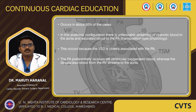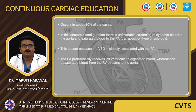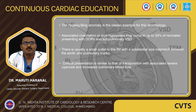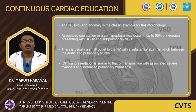Subpulmonary VSD occurs in 30% of cases. In this anatomical configuration there is unfavorable streaming of deoxygenated blood to the aorta and oxygenated blood to the pulmonary artery — it behaves more like transposition physiology. This occurs because the VSD is closely associated with the pulmonary artery; the pulmonary artery preferentially receives left ventricular oxygenated blood whereas desaturated blood from the right ventricle streams to the aorta. The Taussig-Bing anomaly is the classical example of this morphology. Associated coarctation or arch hypoplasia may occur in up to 50% of neonates presenting with DORV and the Taussig-Bing variant. There is usually a small outlet to the right ventricle with substantial size mismatch between the aorta and the pulmonary trunk, and clinical presentation is similar to transposition with severe cyanosis and increased pulmonary blood flow.